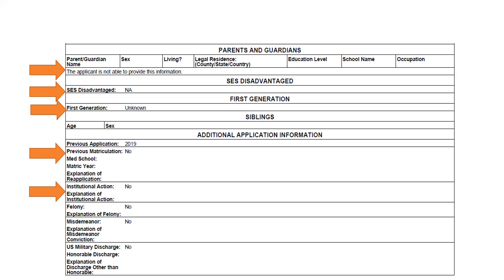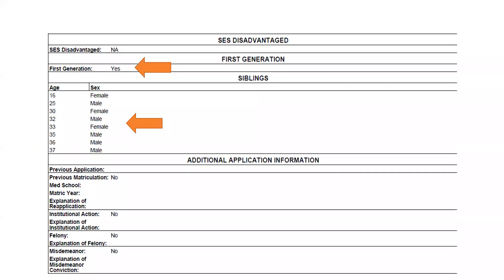You do get a chance to put your explanation in at the same time you have to disclose these things, so schools can hopefully be very fair in how they look at them. Also shown here: SES disadvantaged status, first-generation designation, and sibling information — how old they are and their sex — just that basic info, no names.